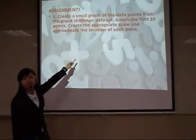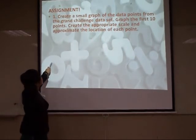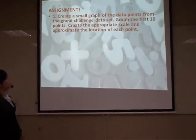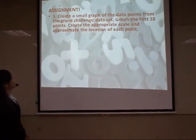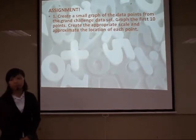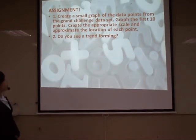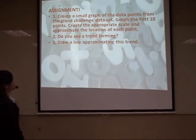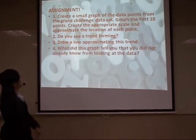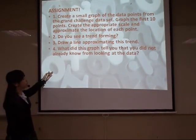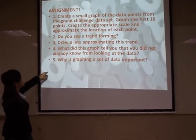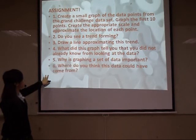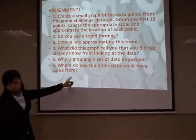Get your notebook and write down your assignment. Create a small graph of the data points from the Grand Challenge dataset. Grab the first ten points, create the appropriate scale, and approximate the location of each point. Do you see a trend? Draw a line approximating this trend. What did this graph tell you that you did not already know from looking at the data? Why is graphing a set of data important? Where do you take this data, and who did it come from?